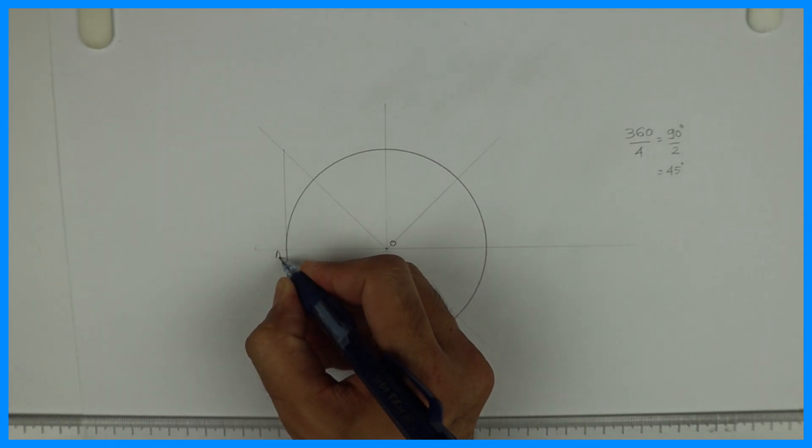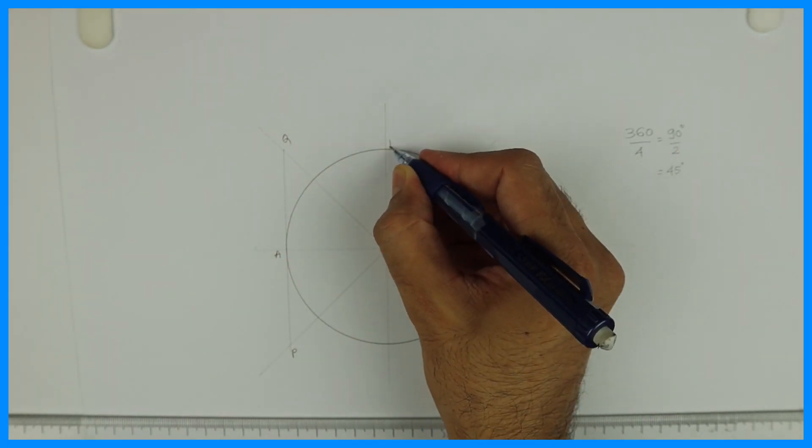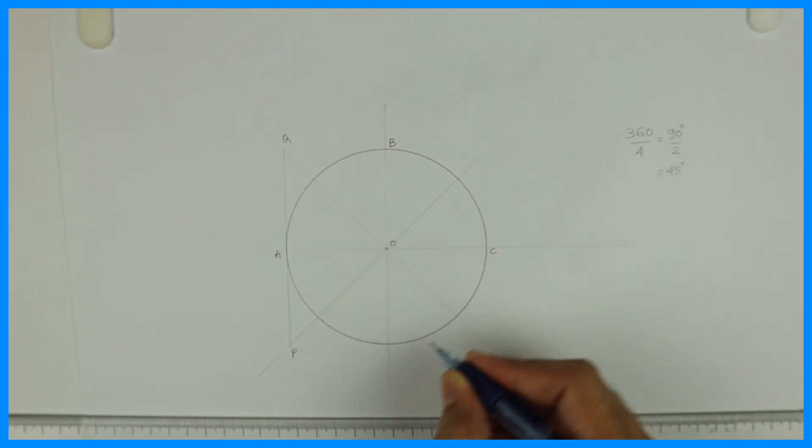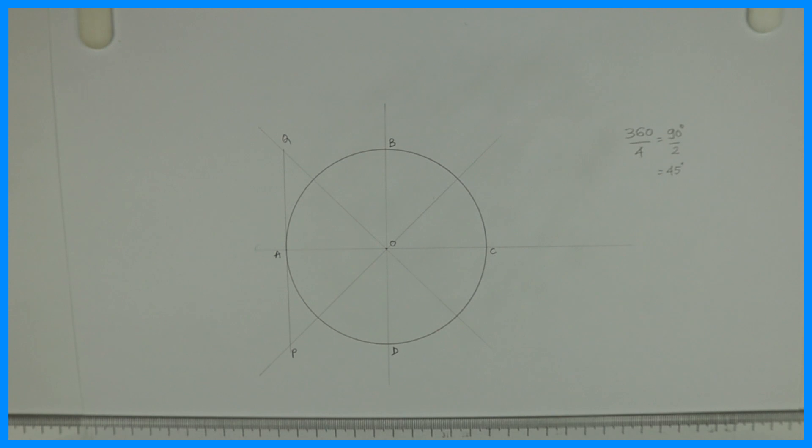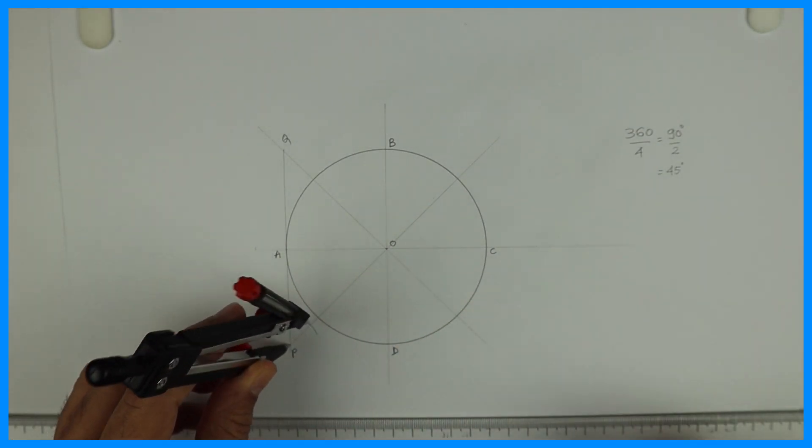This is point A, this is point P, this is point Q, this is B, this is C, this is D. ABCD and this is PQ. Now what we need to do is bisect this angle APO.